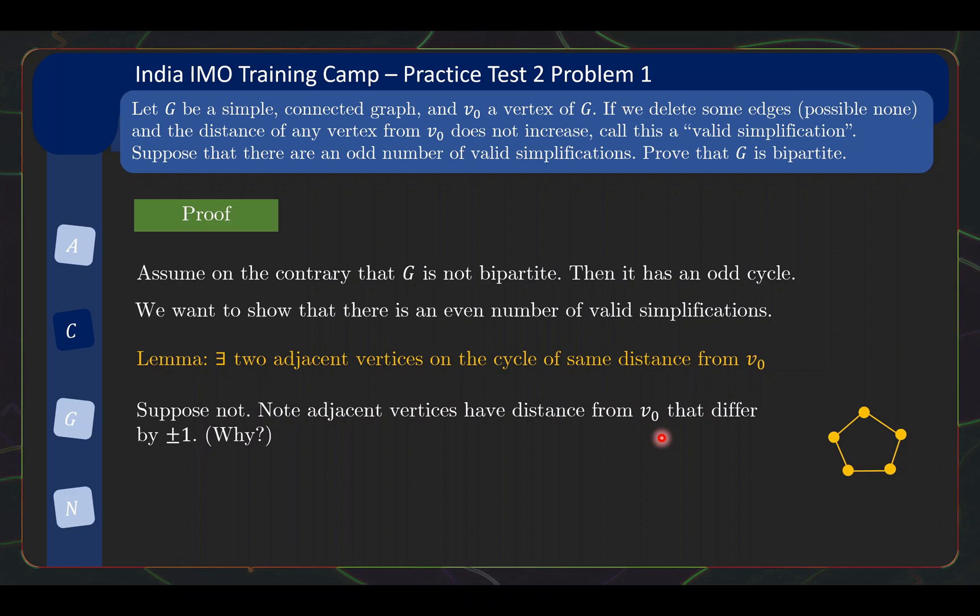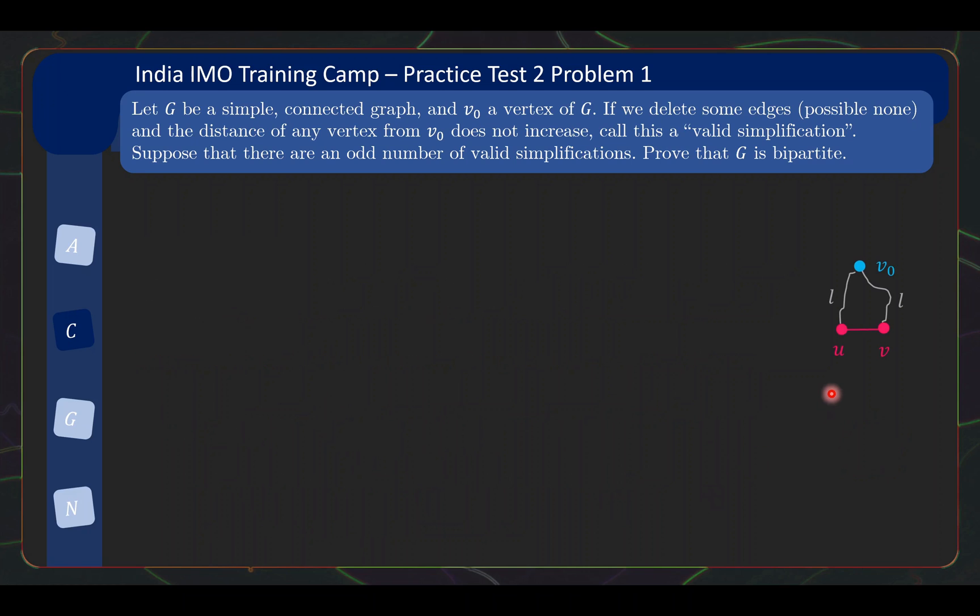And this means that, quite naturally, you have the odd cycle. So this leads you to think about taking the parity around the cycle. So if one of them is odd, then next one must be even, then odd, then even, and so on. By going around, you'll reach a contradiction. So quite easy to prove this lemma. And from now on, we are going to have two vertices, U and V, which are of the same distance from V0. I don't really need to care about the odd cycle anymore. That is done and dusted.